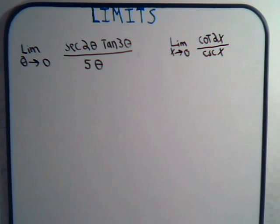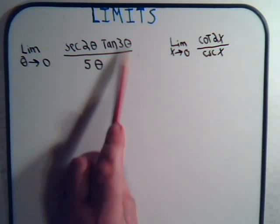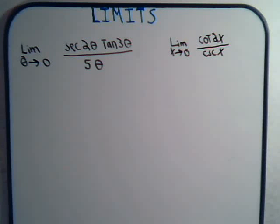The first one here that we want to consider: we have the secant of 2 theta times the tangent of 2 theta divided by 5 theta, and we want to take the limit of that as theta goes to 0. Clearly we just can't plug in theta equals 0 and get an answer because this will be 0, that will be 0. Again, we're stuck with 0 divided by 0 which gets us nowhere.